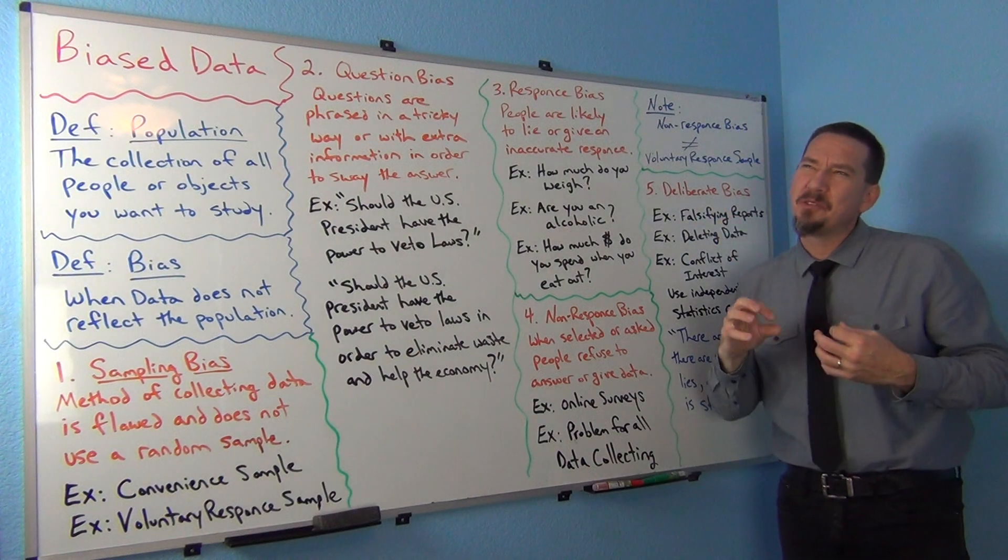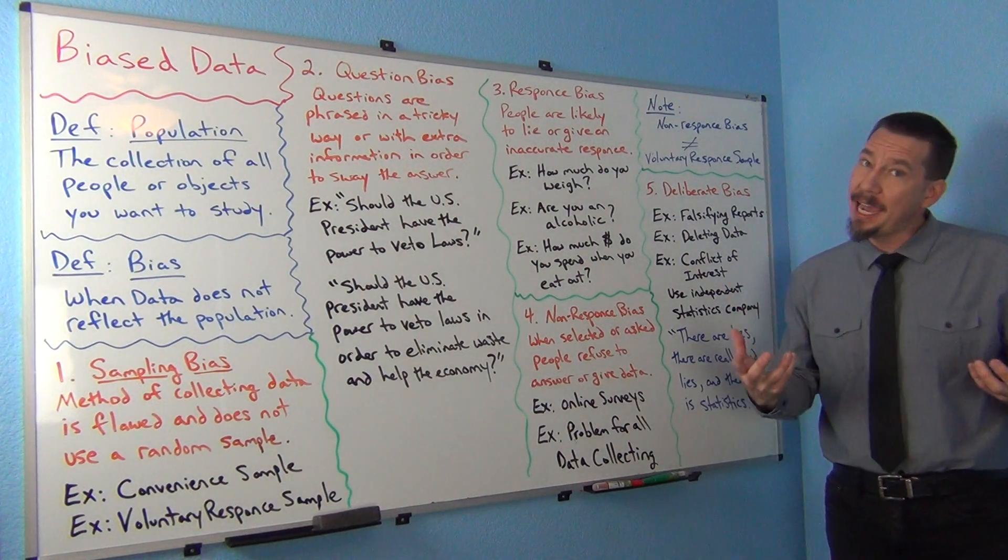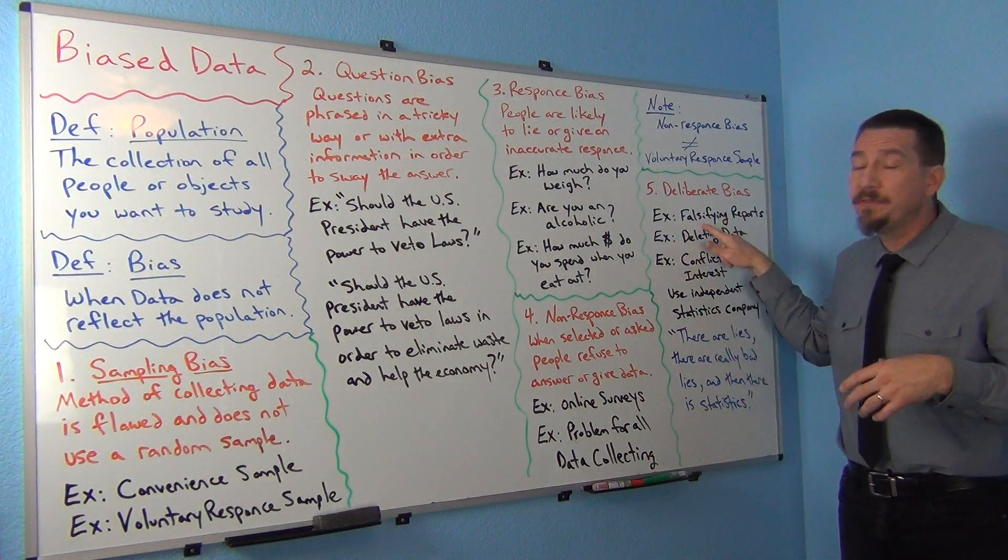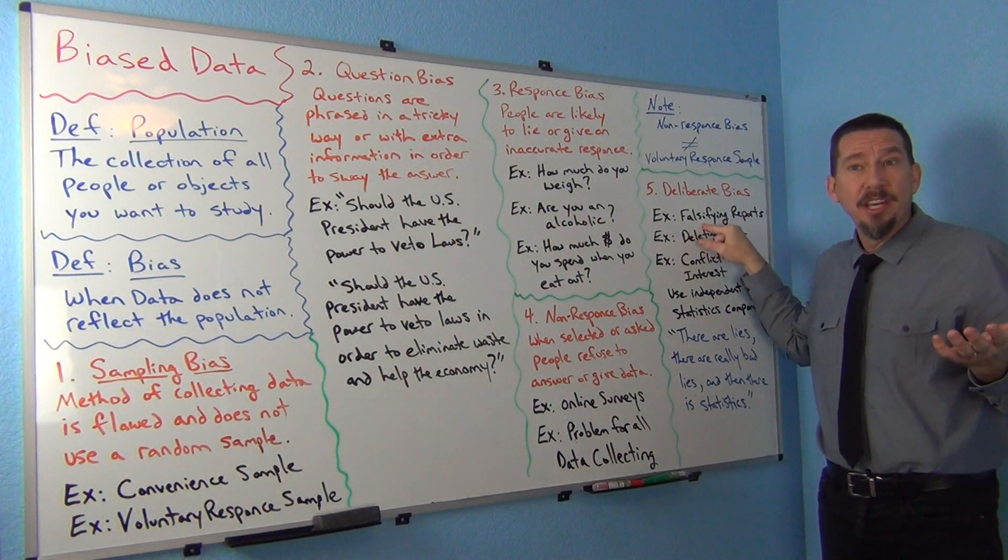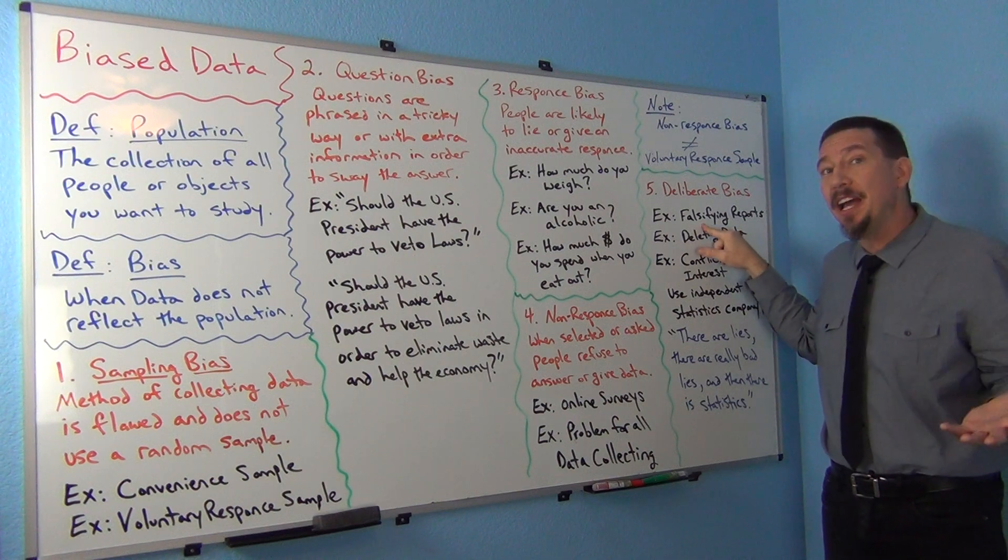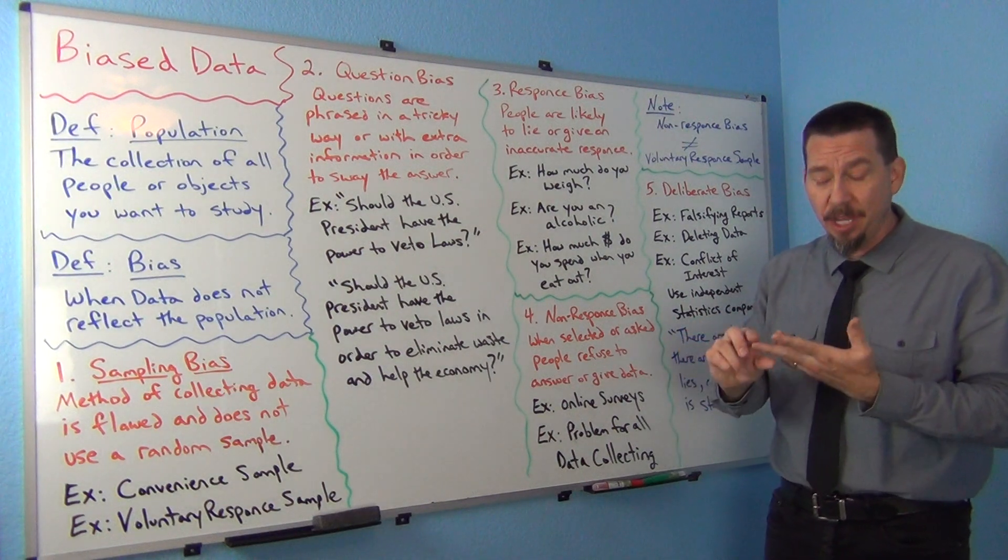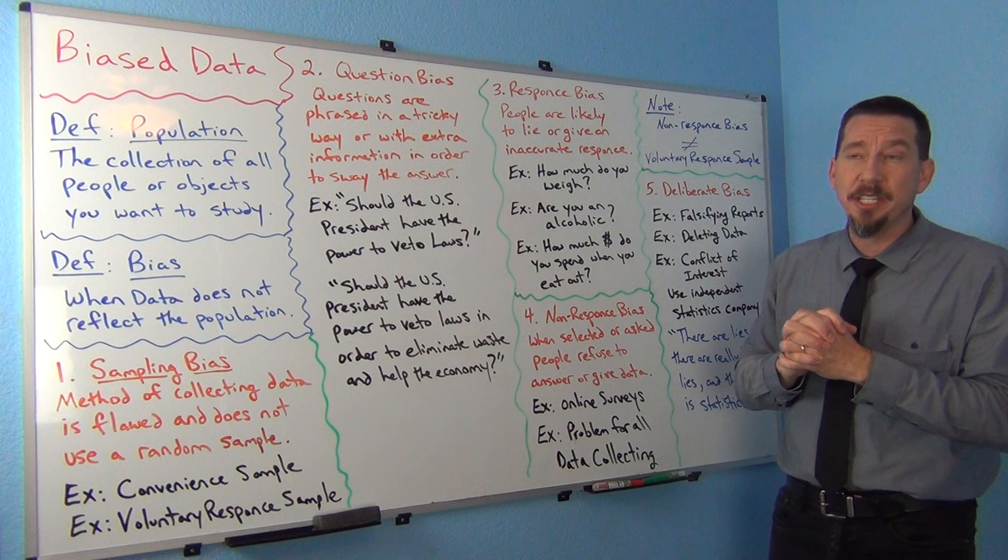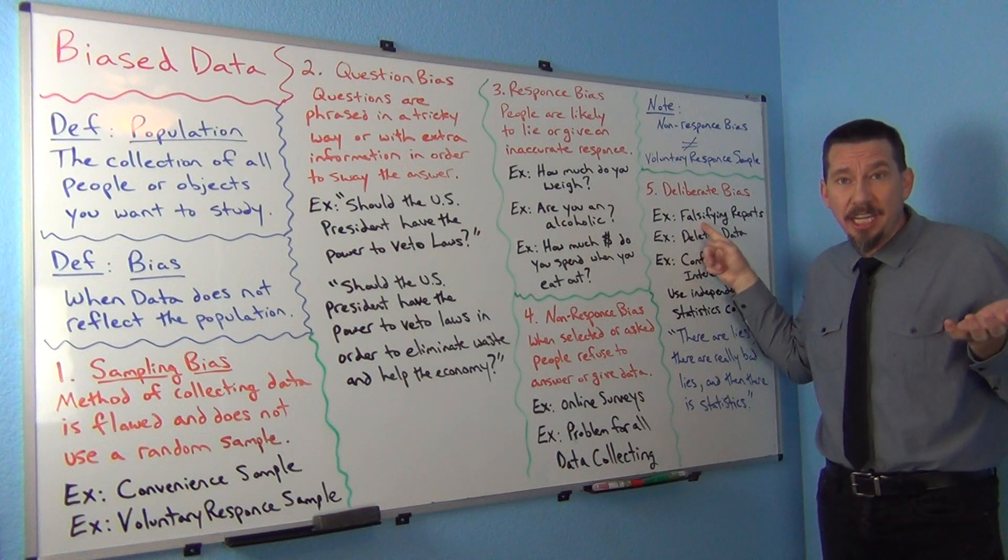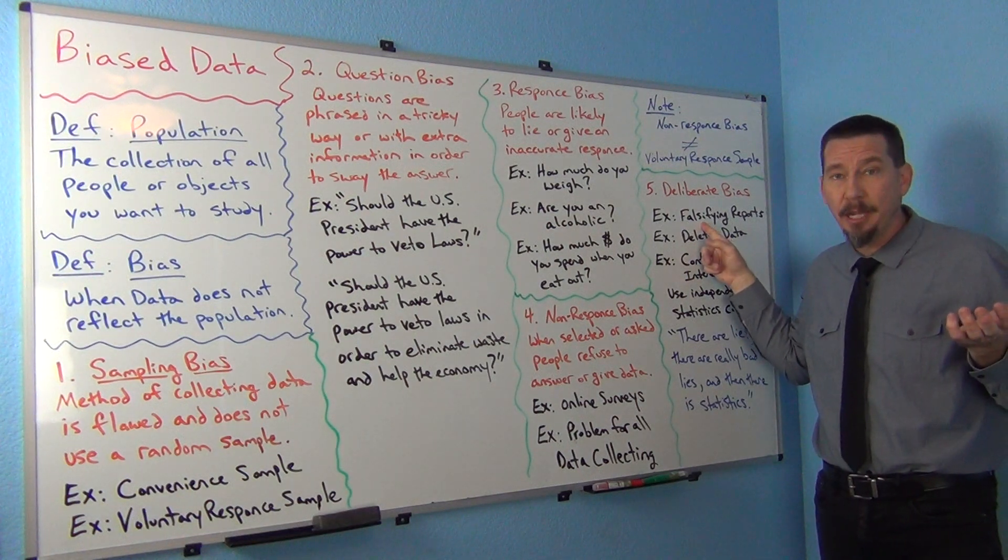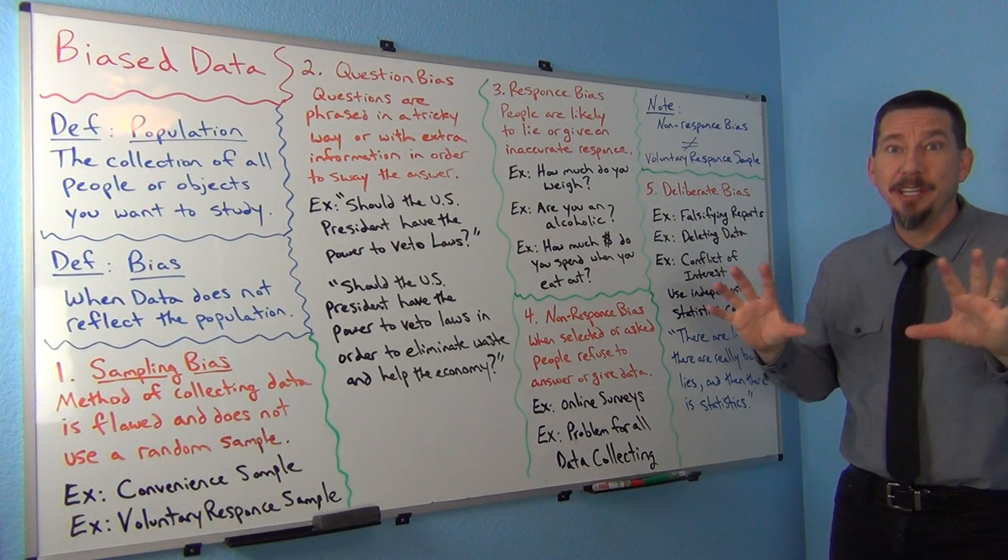And it does happen. Falsifying reports. Just a few years ago, one of the biggest pharmaceutical companies in the world was caught that they had been falsifying reports. They were supposed to do regular checks of their medicines to make sure it had the right amount of medicine. So they would randomly select pills to check, and it was determined that they had been falsifying those reports. They hadn't been checking any of the medicine. They just were falsifying reports. Really bad stuff. That's really bad.